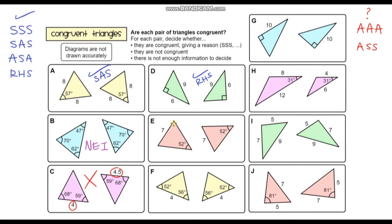For question E, we're only given one side length and one angle. The angles are both 52 degrees, and the side length opposite the 52 degree angle is 7 in both triangles. But we need some more information — these two triangles could be congruent, but we don't know. So this one is also not enough information.